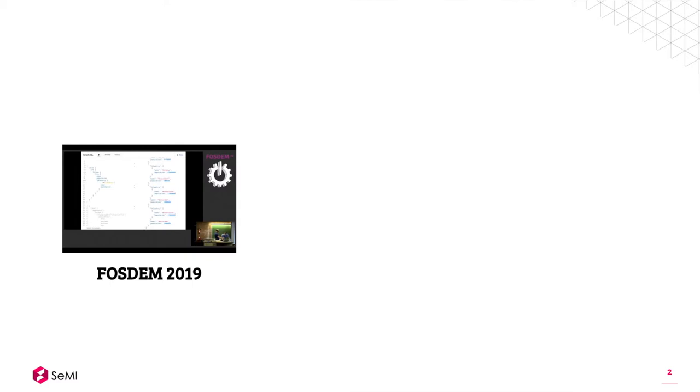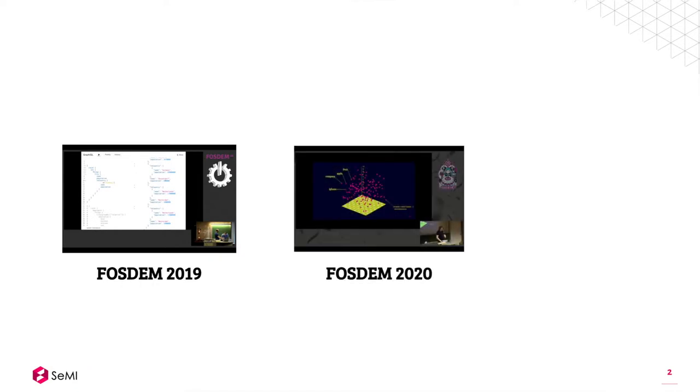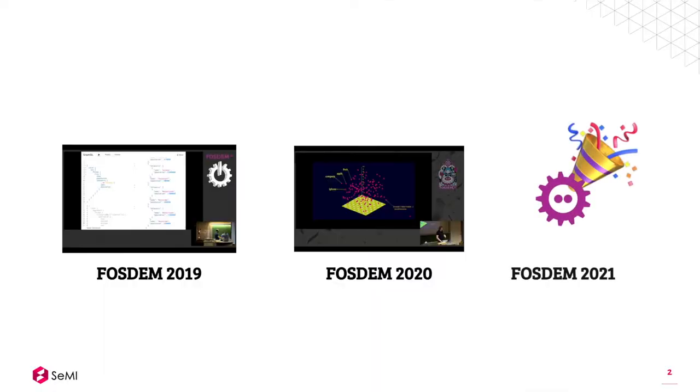Two years ago we showed Weaviate for the first time. My colleague was showing how we were working on Weaviate, how we were focusing on vectorizing nodes in the graph. Last year you could already see how Weaviate was turning more into a full-fledged search engine. This year I'm very happy to announce that we've released Weaviate version 1 — a full-fledged database with full CRUD support, focusing on vector indexing and vector search.